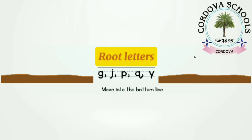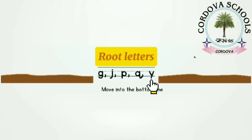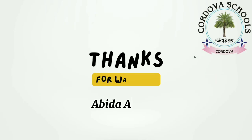The letters which are written on the lower three lines are called root letters. In lowercase, the root letters are: g, j, p, q, and y. Thank you so much for watching my video. Allah Hafiz.